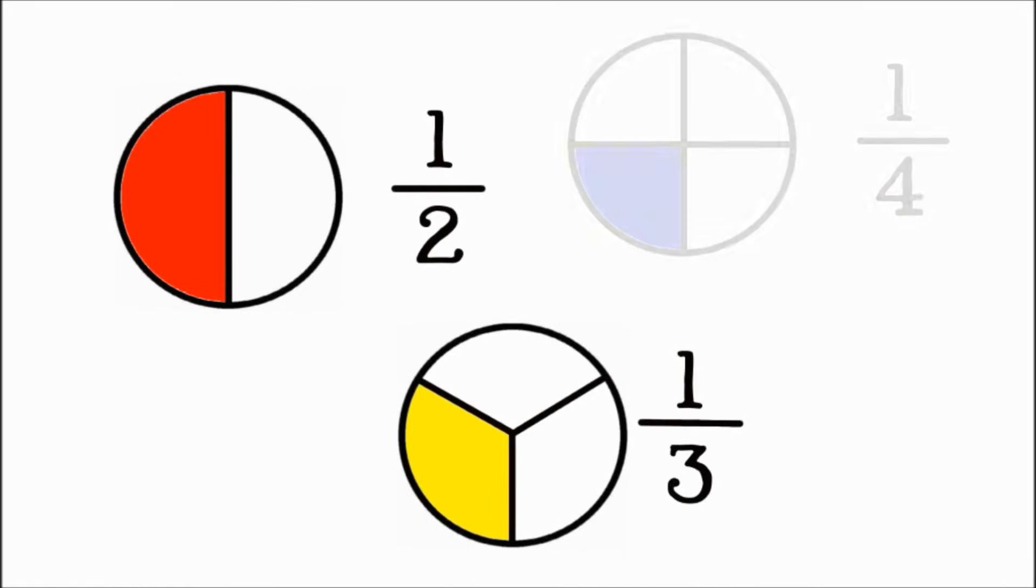A fraction is a number that is used to show how many equal parts there are. When writing a fraction, we put one number above another number with a line in between them.